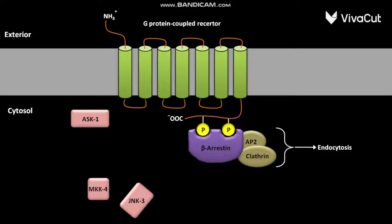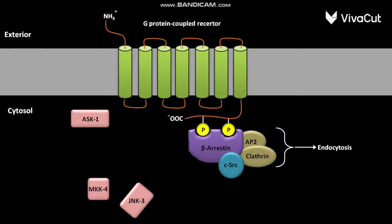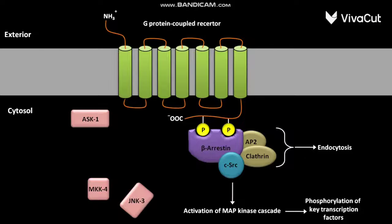Another protein called c-Src then binds to the bound beta-arrestin. This binding causes the activation of the MAP kinase cascade, which leads to the phosphorylation of key transcription factors.